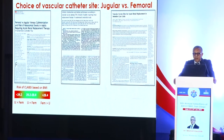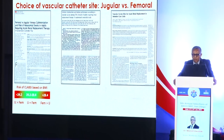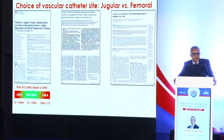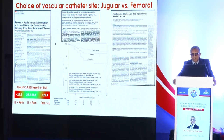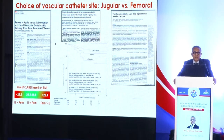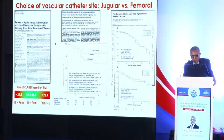When choosing between an IJ catheter and a femoral catheter, the CATEVIA trial and accompanying studies provide insights. Regarding central line-associated bloodstream infections, in patients with a BMI greater than 28.4, femoral access was associated with a greater risk of infection. In patients with a BMI less than 24.2, IJ catheters were associated with a greater risk of catheter-related bloodstream infections. Regarding catheter dysfunction, the risk was significantly increased with left IJ catheters compared to right IJ or femoral catheters. Therefore, when available, a femoral catheter of sufficient length may be preferable to a left IJ catheter.